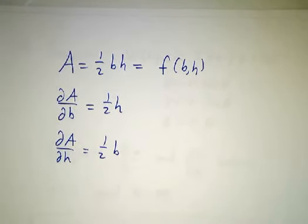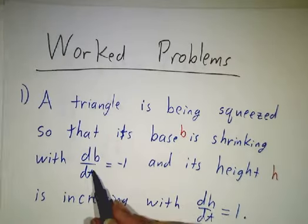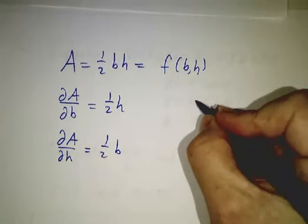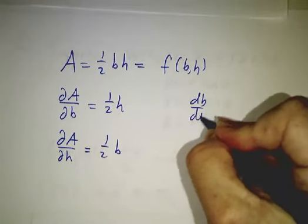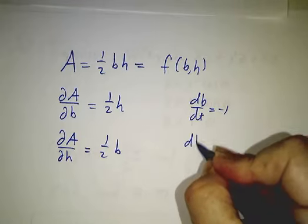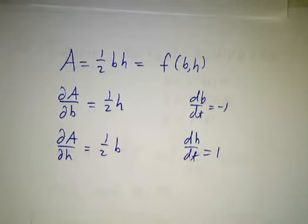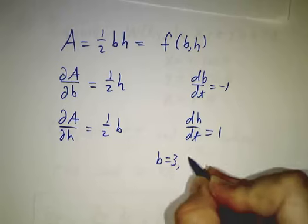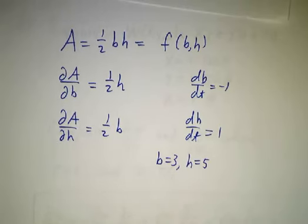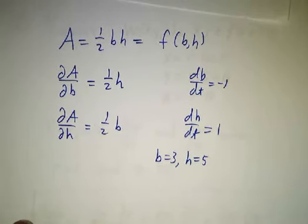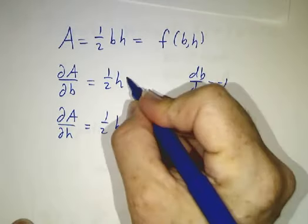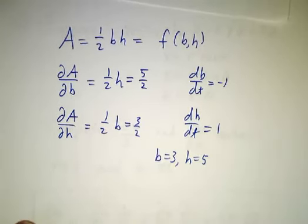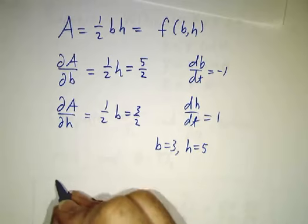Now let's take the data we're given. We're told that db/dt = -1 and dh/dt = 1, and this happens when b = 3 and h = 5. At this instant, ∂A/∂b = 5/2 and ∂A/∂h = 3/2.